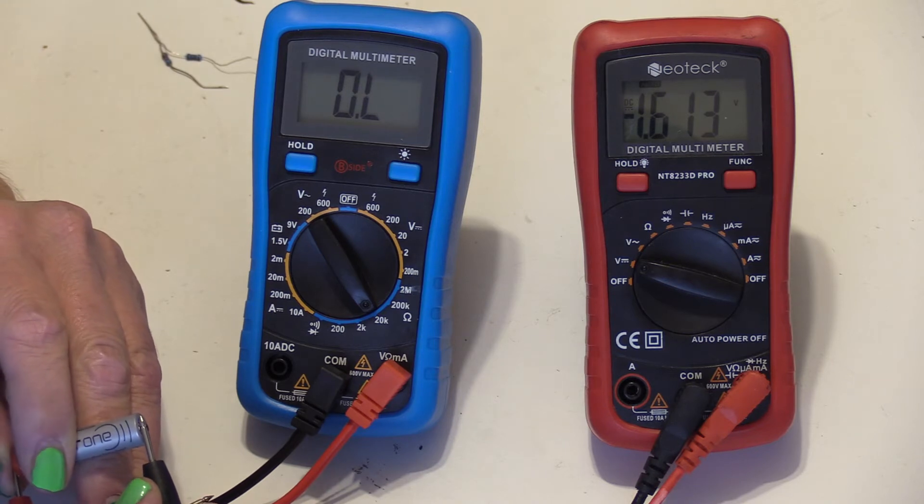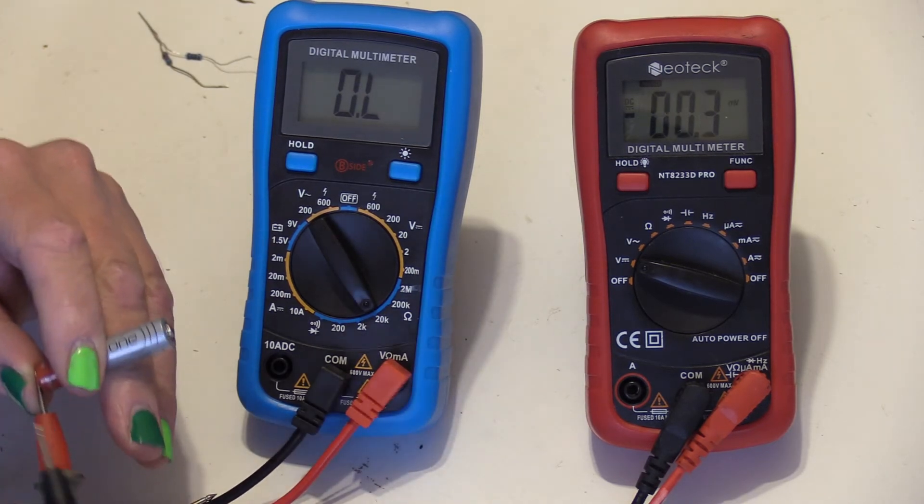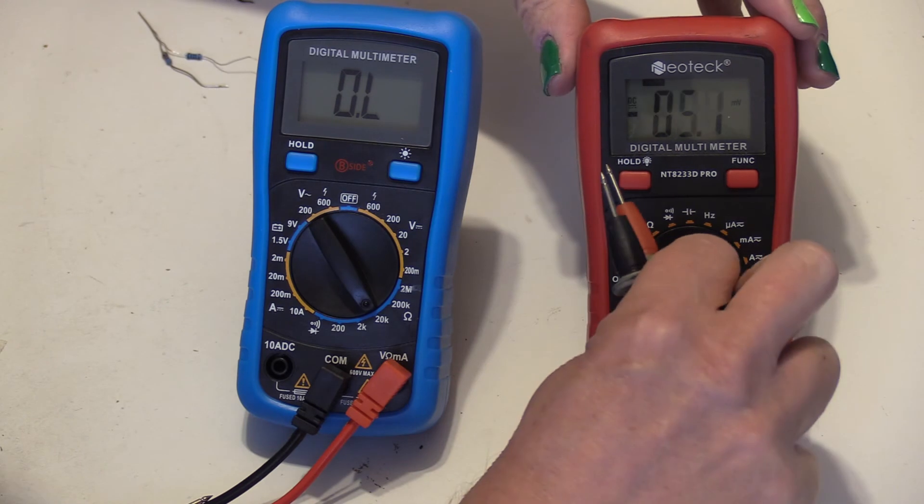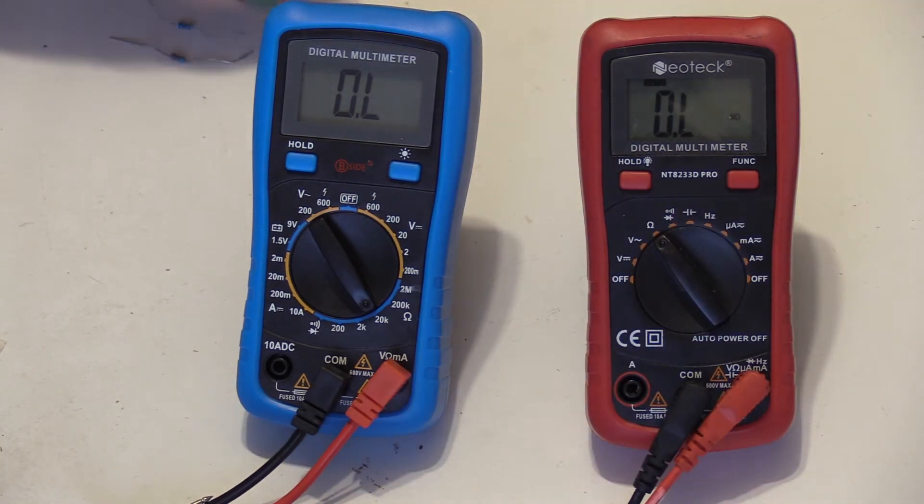Yep, 1.6, but it takes a second or two to get there. Let's go to resistance. As you can see, it says OL, which is over limit, because obviously it's not actually checking anything.